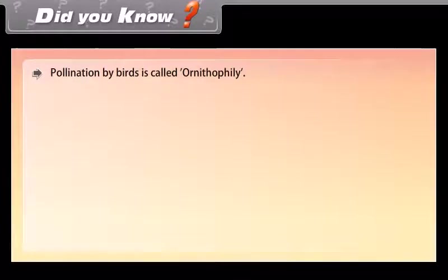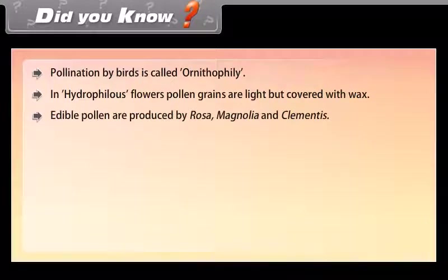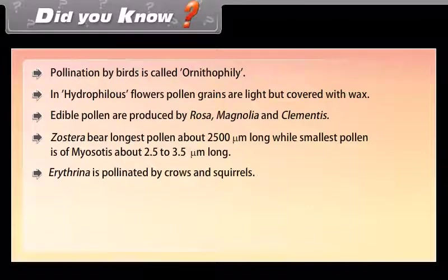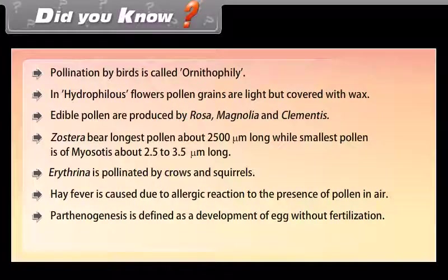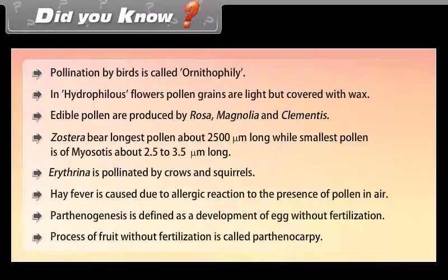Did you know? Pollination by birds is called ornithophily. In hydrophilous flowers, pollen grains are light but covered with wax. Edible pollen are produced by Rosa, Magnolia, and Clematis. Zostera bears the longest pollen — about 2500 mm long — while the smallest pollen is of Myosotis, about 2.5 to 3.5 micrometers long. Erythrina is pollinated by crows and squirrels. Hay fever is caused due to allergic reaction to the presence of pollen in air. Parthenogenesis is defined as the development of an egg without fertilization. The process of fruit development without fertilization is called parthenocarpy.